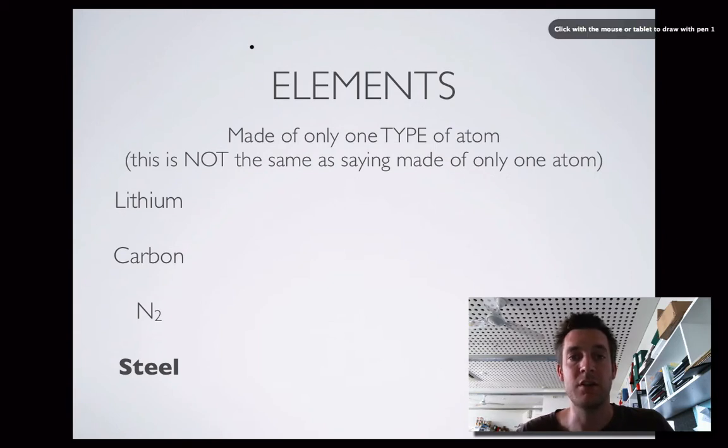So if we look at lithium, for example, you can look lithium up in the periodic table, you can find its symbol. You'll find all the elements in the periodic table, all the elements that we've discovered. Lithium has the symbol Li, and if I had some lithium, it would only have lithium atoms in it. That's what it means to be an element. If I had some carbon, symbol C, that would also only have carbon atoms in it. So it's an element.